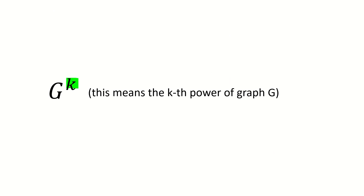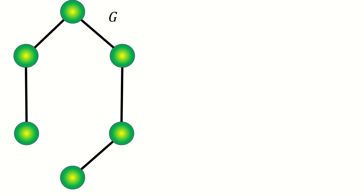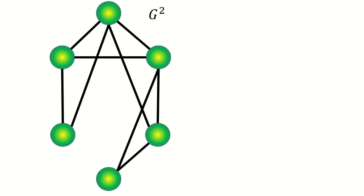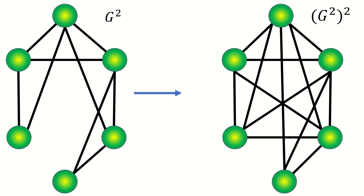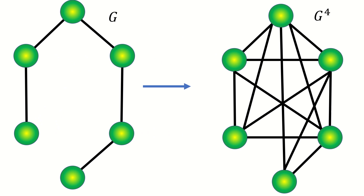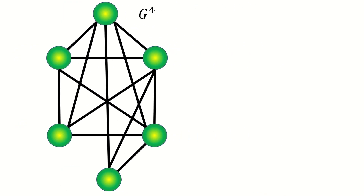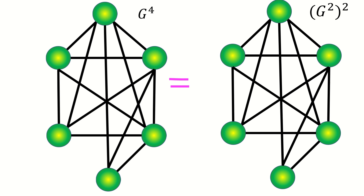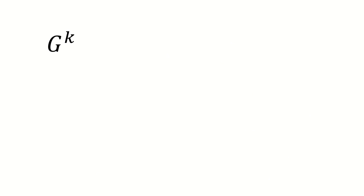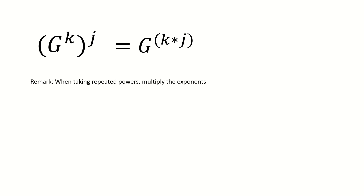The property we'll examine in this video is repeated powers of a graph. Let's look at a motivating example. Say we have a graph g and we take its second power. Next, suppose we take the second power of that graph. The resulting graph is equivalent to the fourth power of g. Generally, if we take the kth power of a graph and then take the jth power of that graph, the result is the k times jth power of the graph g. In other words, we can multiply the exponents when we take repeated powers.